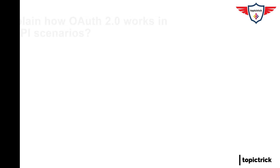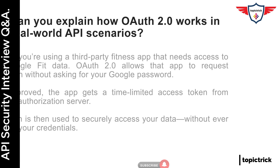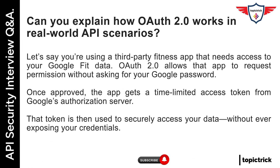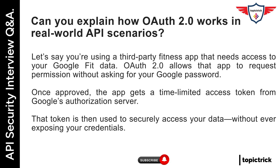Can you explain how OAuth 2.0 works in real-world API scenarios? Sure. Let's say you're using a third-party fitness app that needs access to your Google Fit data. OAuth 2.0 allows that app to request permission without asking for your Google password. Once approved, the app gets a time-limited access token from Google's authorization server. That token is then used to securely access your data without ever exposing your credentials.